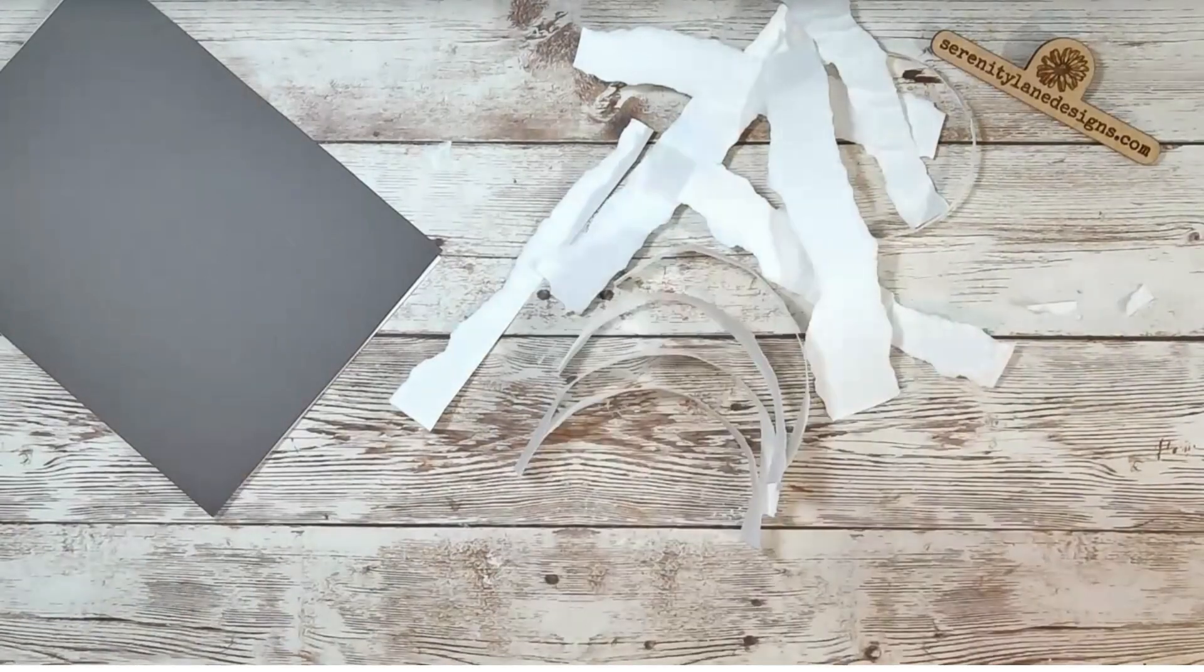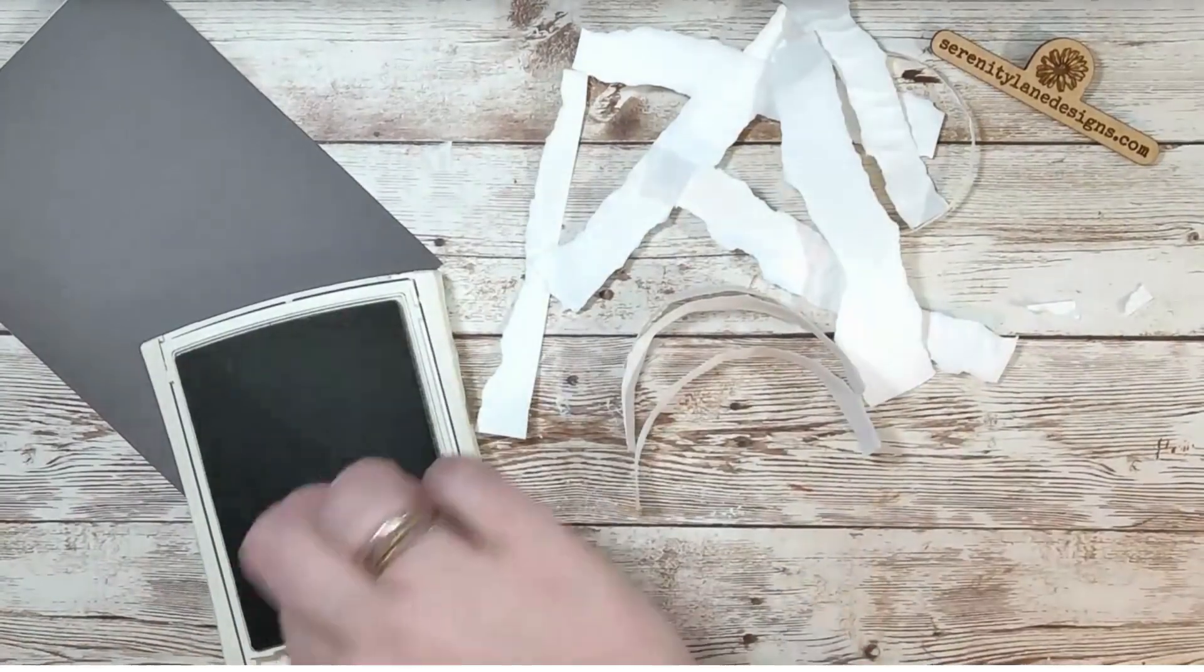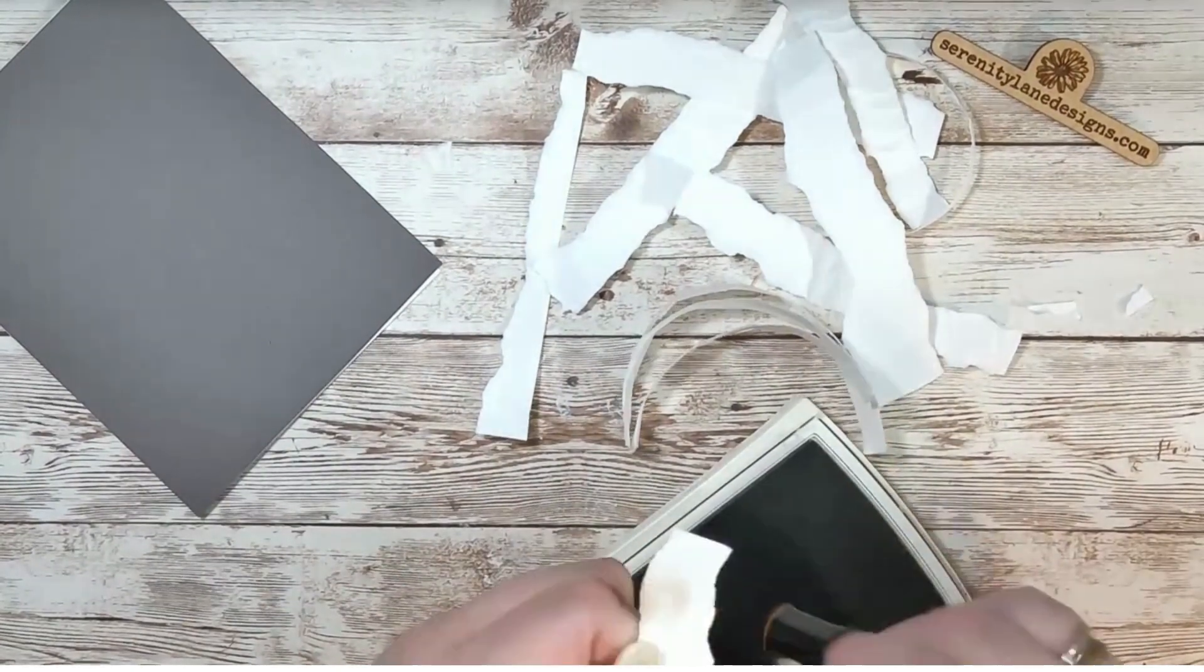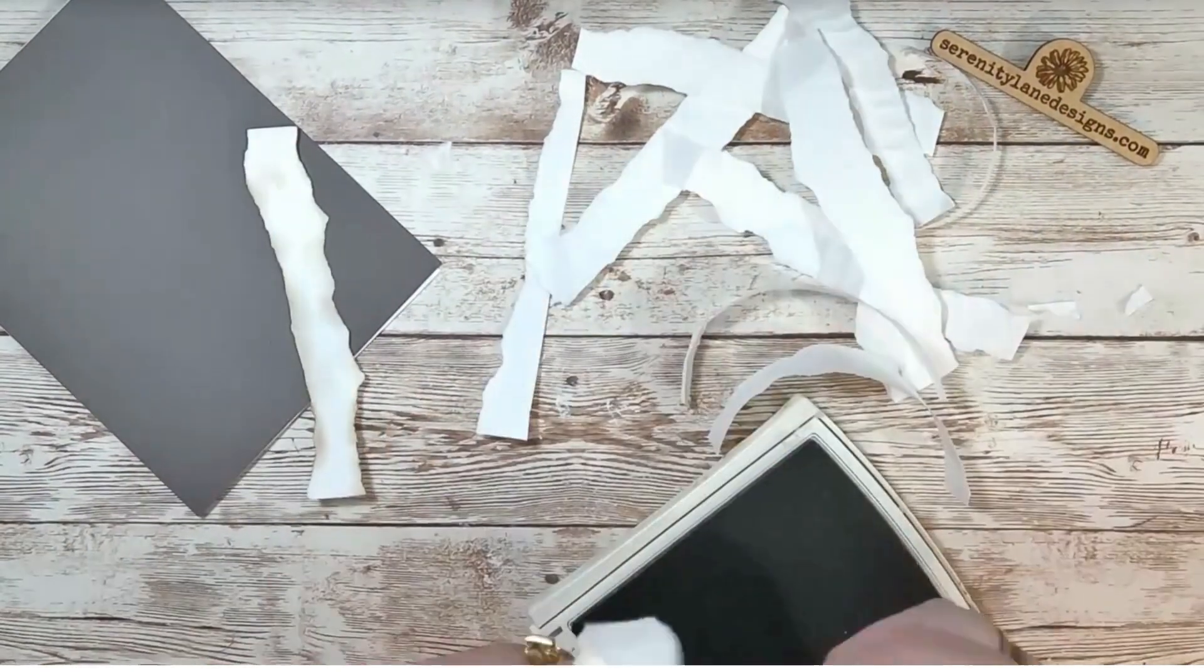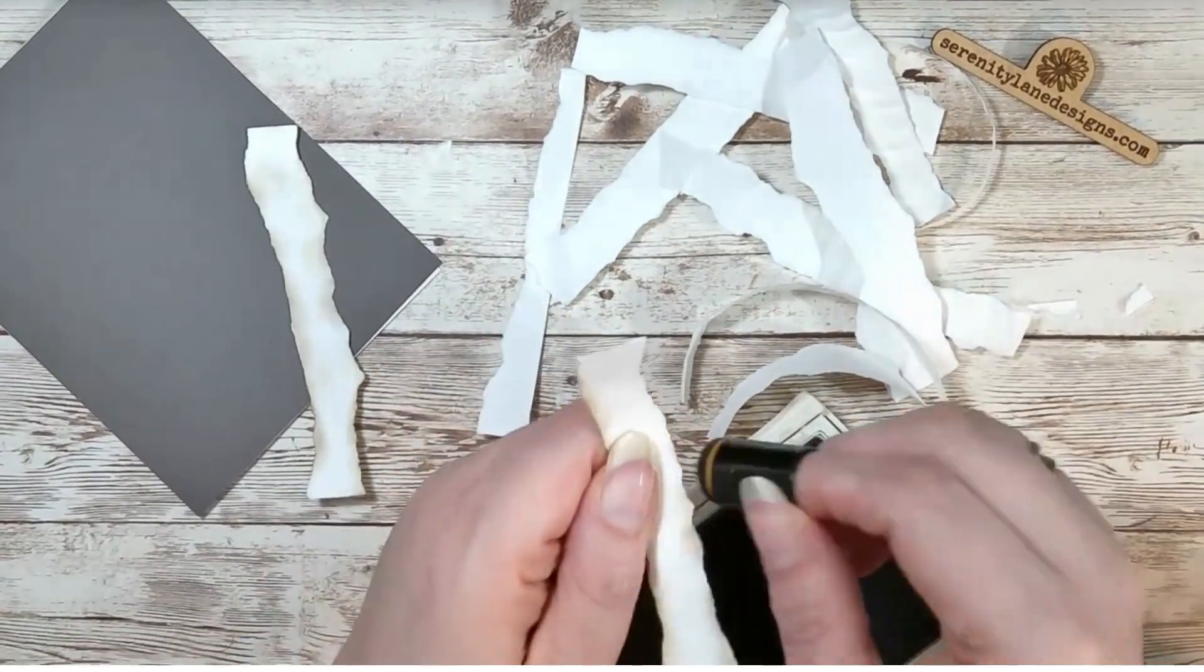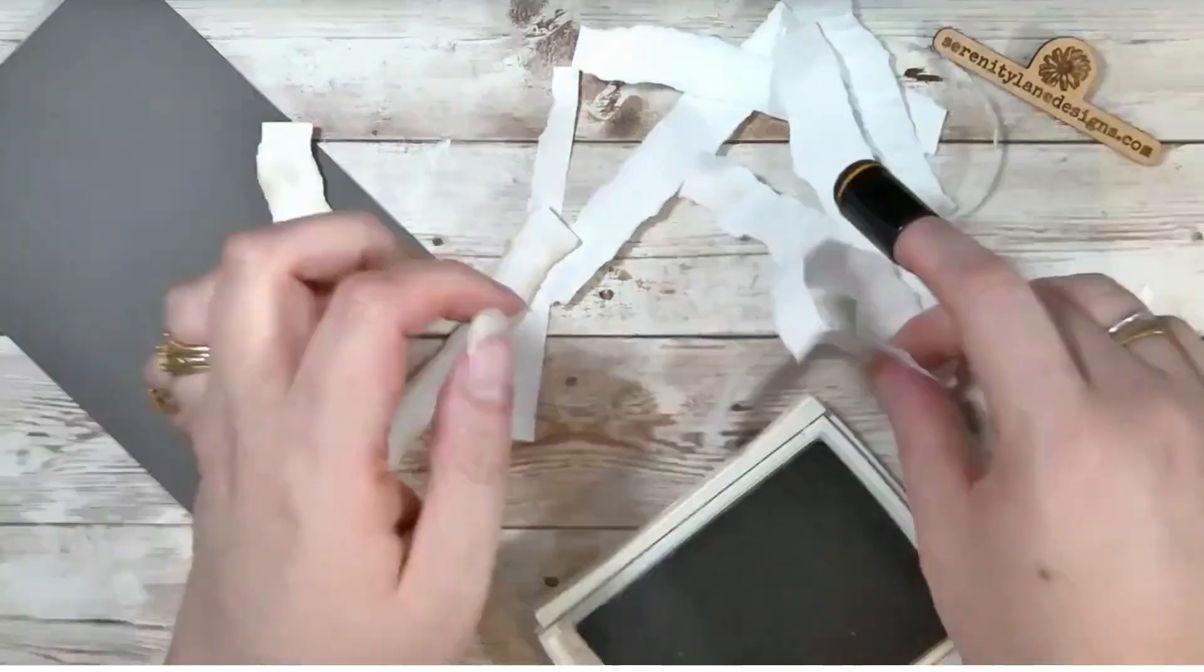Once you have all the strips cut and torn up, I again took some ink and put on the edges for it to kind of stand out, make it look a little ancient and torn. I used a brown shade.